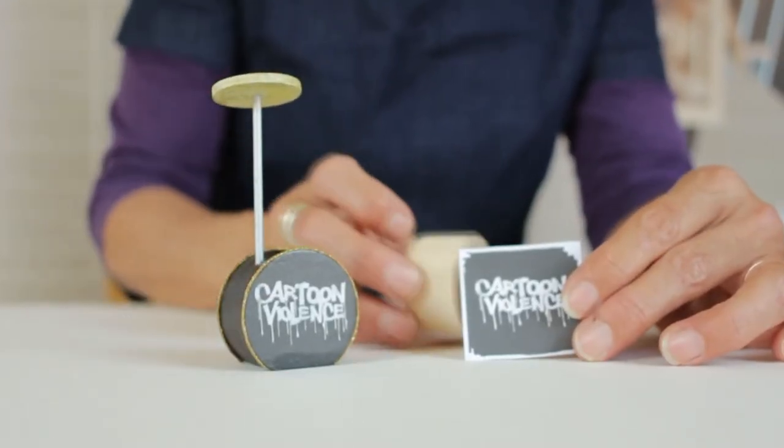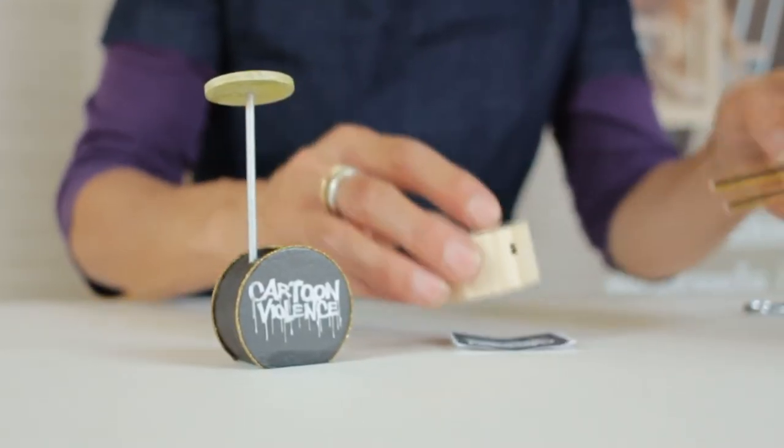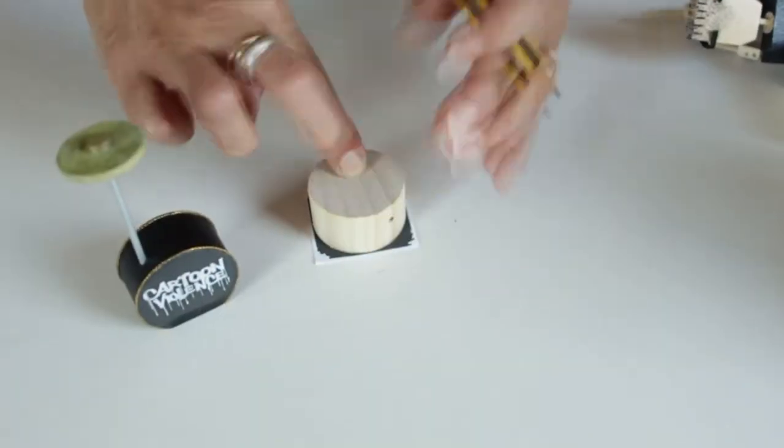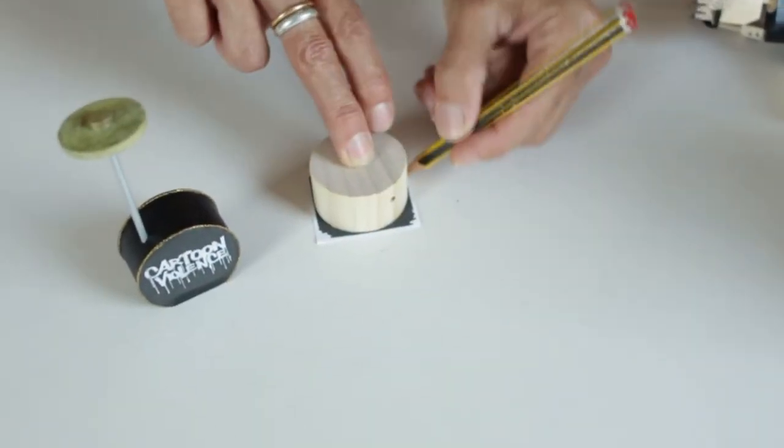The front of the bass drum is a great place to advertise the band your drummer is in. I printed the Cartoon Violence logo out, drew round it and glued it on.